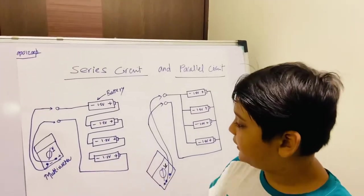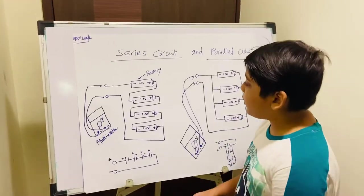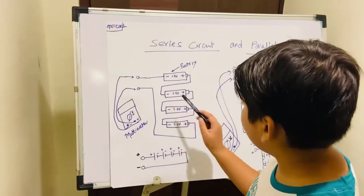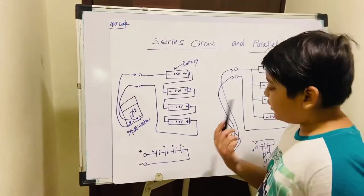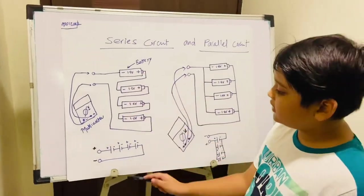We are going to measure it in the multimeter. First, let's see the series circuit. So the positive is connected to the negative, and the negative is connected to the positive, one after another.